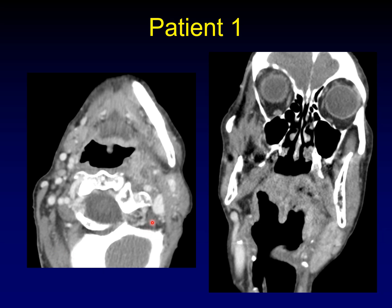Here's the axial image. This is the area of interest right here. A coronal image shows you some of the same findings. That's patient number one.